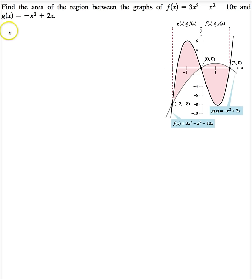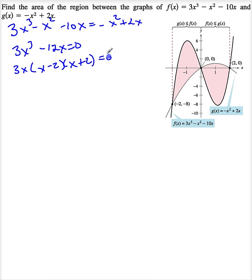So the first thing I want to do is set f equal to g. So 3x cubed minus x squared minus 10x has got to equal negative x squared plus 2x. Now remember you want to factor. So if I bring this to the other side I get 3x cubed, that's going to cancel, minus 12x equals 0. So I want to factor. So I'm going to have 3x times x minus 2 times x plus 2 equals 0. So I have three intersection points: x equals 0, 2, and negative 2.